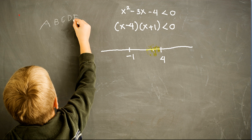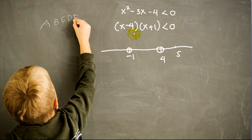If we plug in 4 or negative 1, the left hand side equals 0, but 0 less than 0 is a false statement. Therefore negative 1 and 4 are not part of the solution and are excluded. Now take a number bigger than 4, say 5. Plugging in: 5 minus 4 is 1, and 5 plus 1 is 6, giving 1 times 6 equals 6. Is 6 less than 0? That is a false statement, so x greater than 4 is not part of the solution.